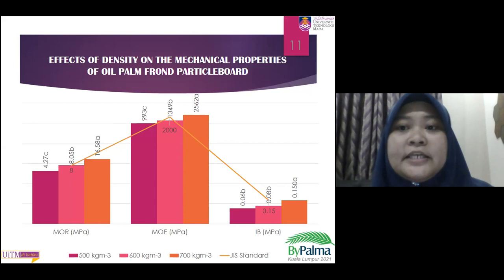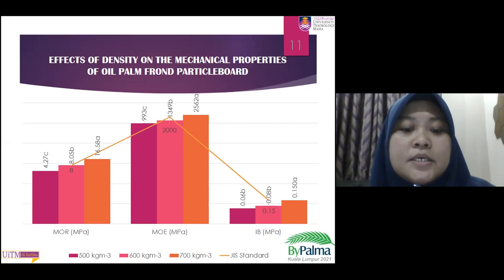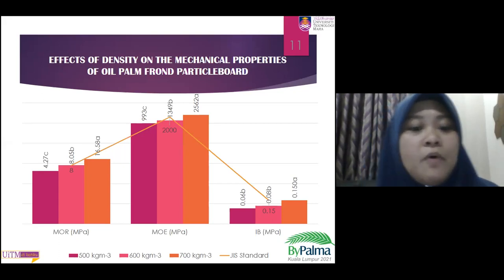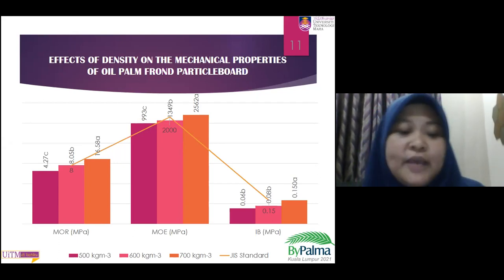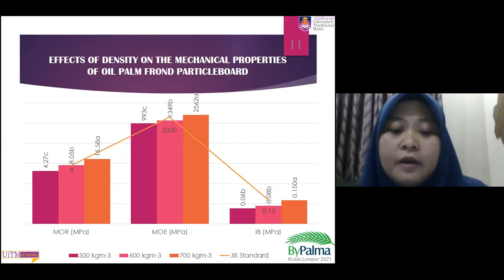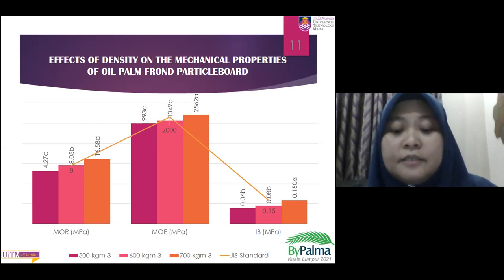This graph shows the effect of density on the mechanical properties of the oil palm frond particle board. From the graph, you can see that density significantly affects all board properties — MOR, MOE, and also the internal bonding. It shows that as density increased, the values of the mechanical properties and dimensional stability also increased. The density of the board is one of the main factors affecting the properties of the particle board and other wood composites, and an increase in density leads to improved board properties.